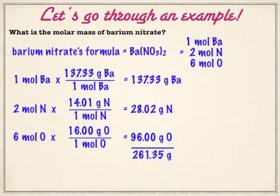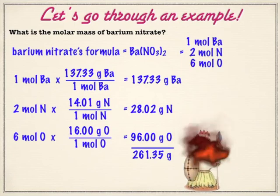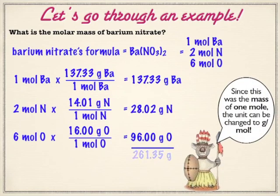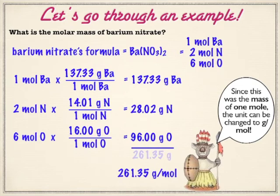We get 261.35 grams. Now technically that just says grams, but remember what we said before — you can add a unit back onto it, as the koala is going to point out, because we assumed this was one mole of this substance. So you're going to end up with 261.35 grams per mole. Units don't usually magically appear, but they don't really magically appear either, because we went under the assumption that we have one mole of this.